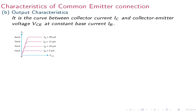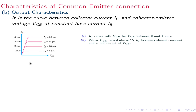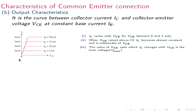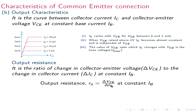The output characteristic is the curve between Ic and Vce at constant Ib. Ic varies with Vce for values between 0 and 1 volt. Above 1 volt, Ic is almost constant — Ic is independent of Vce and depends only on Ib. The value of Vce up to which Ic changes is called the knee voltage. The output resistance Ro equals delta Vce divided by delta Ic at constant Ib, and its value is of the order of 50 kilohms.